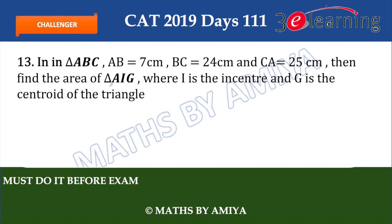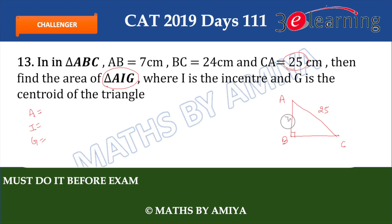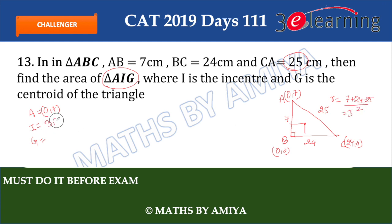We need to find the area of triangle AIG. If I give you the coordinates of A, I, and G, you can solve it easily. Let's draw a right-angled triangle ABC with the right angle at B. The largest side (hypotenuse) is 25. AB = 7 (on the Y-axis), BC = 24 (on the X-axis). So B = (0, 0), A = (0, 7), C = (24, 0). The incenter I has r = (7 + 24 − 25) / 2 = 3, so I = (3, 3).